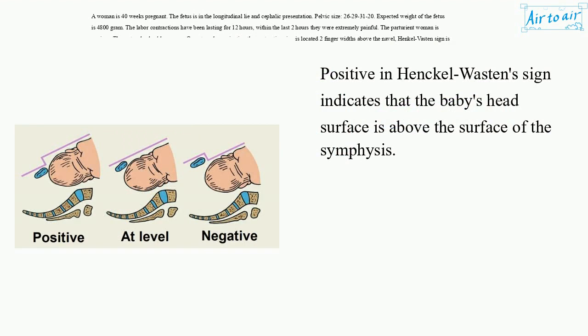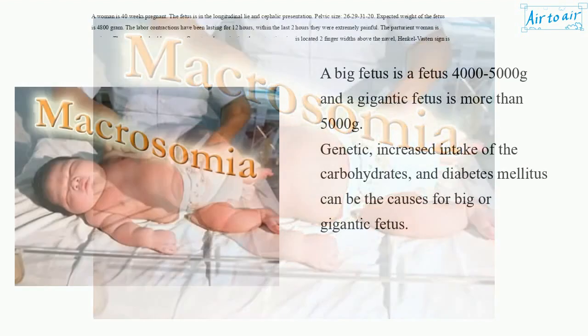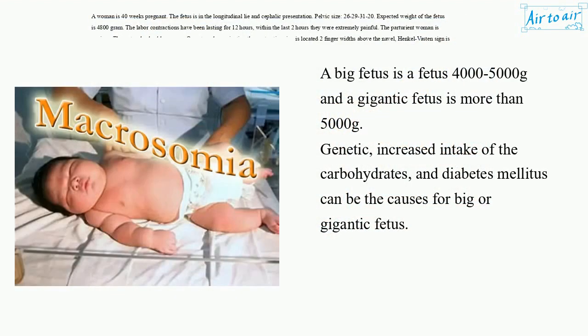A positive Henkel-Vasten sign indicates that the baby's head surface is above the surface of the symphysis. A big fetus is defined as 4,000 to 5,000 grams, and a gigantic fetus is more than 5,000 grams. Genetic factors, increased intake of carbohydrates, and diabetes mellitus can be causes for a big or gigantic fetus.